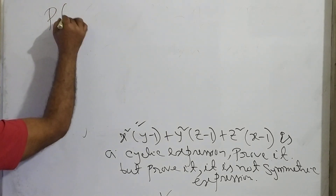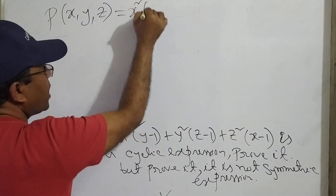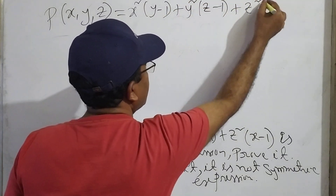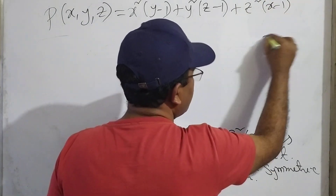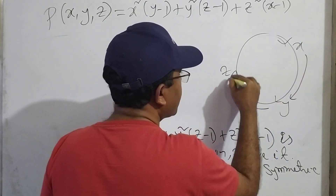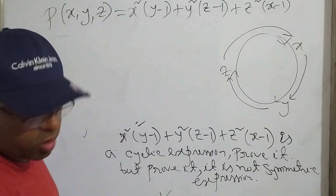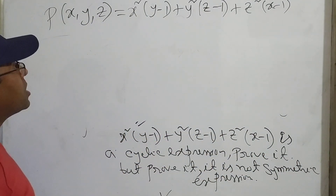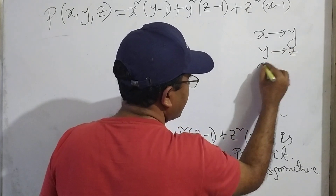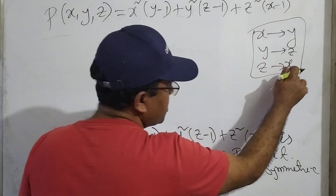P of x, y, z — the expression in three variables: x squared times (y minus 1) plus y squared times (z minus 1) plus z squared times (x minus 1). Now we replace: x is replaced by y, y is replaced by z, and z is replaced by x. That is, first is replaced by second, second is replaced by third, and third is replaced by first.